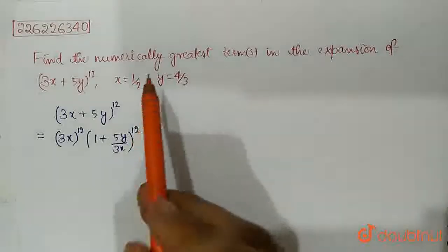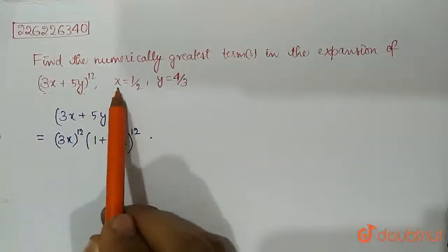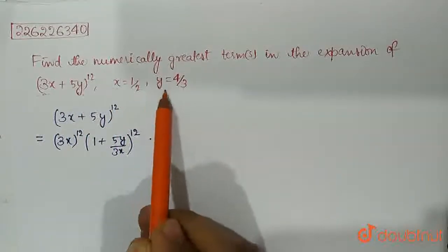So we have to find the numerically greatest term in the expansion of this expression where the value of x is half and the value of y is 4 by 3.